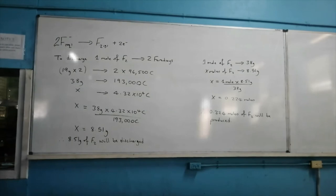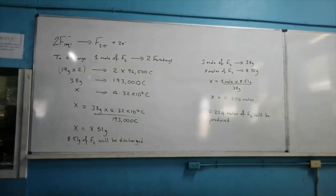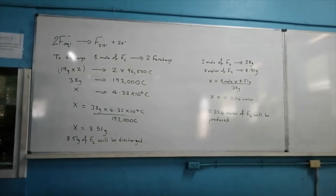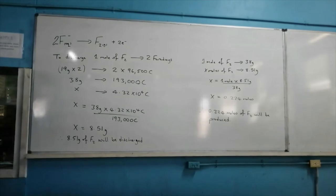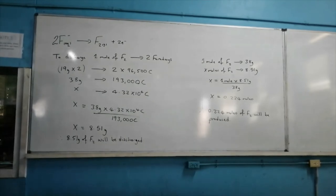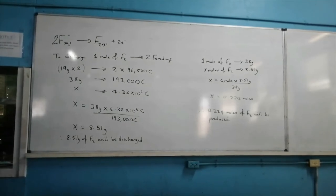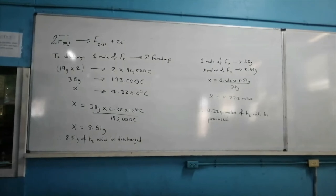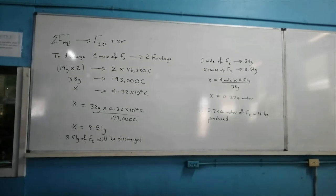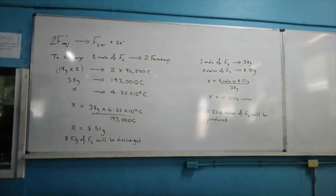In terms of the number of moles of fluorine being produced, we simply do a mass-to-mole conversion. If 1 mole of fluorine has a mass of 38 grams, then what number of moles would have a mass of 8.51 grams? Cross multiplying again, we get 0.224 moles of fluorine produced.